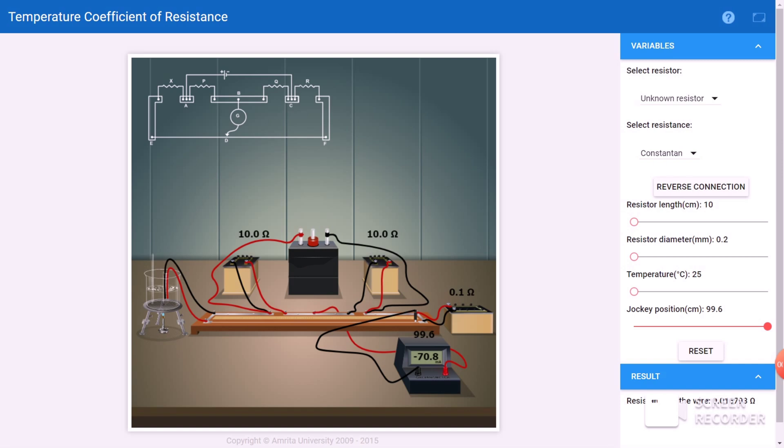So now let's slide the jockey over the wire to know where there is zero deflection by sliding it. So the first balancing length is 51 centimeter. Now reverse the connection and slide the jockey, find out where you got zero deflection. So the second balancing length is 49 centimeter. Note down these lengths. Repeat the same steps for different temperatures.